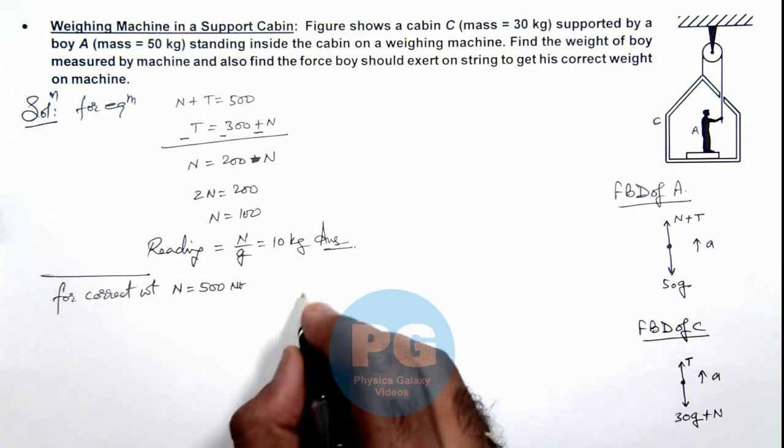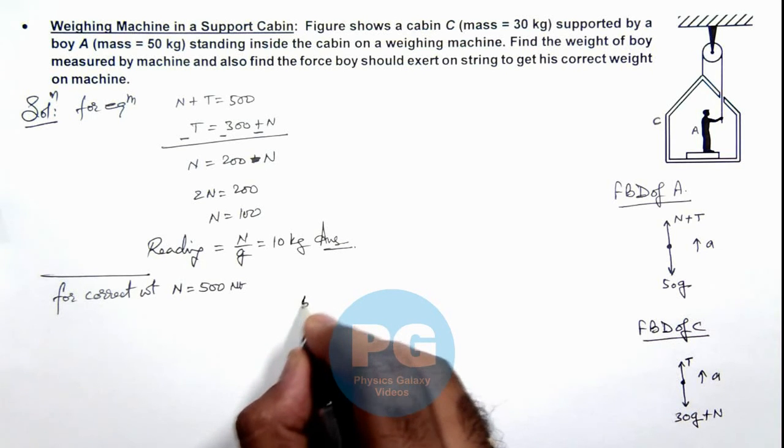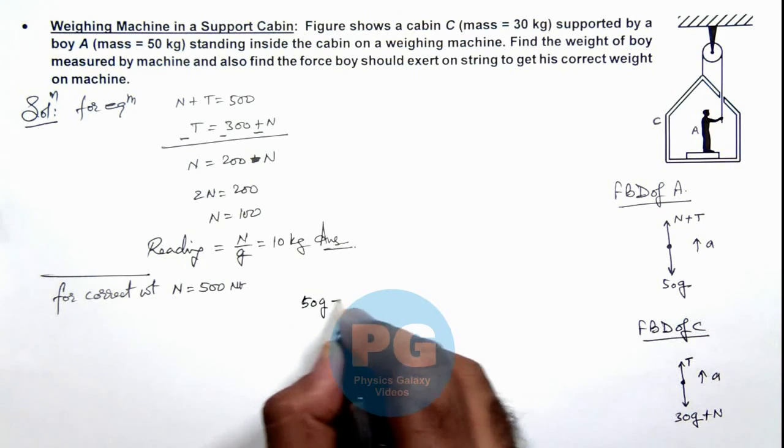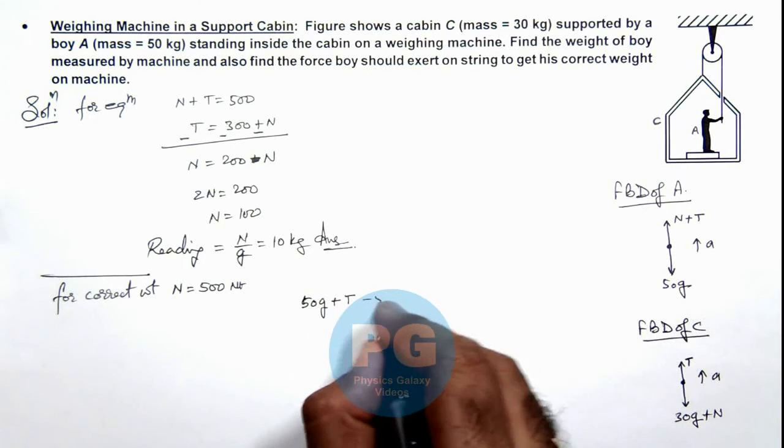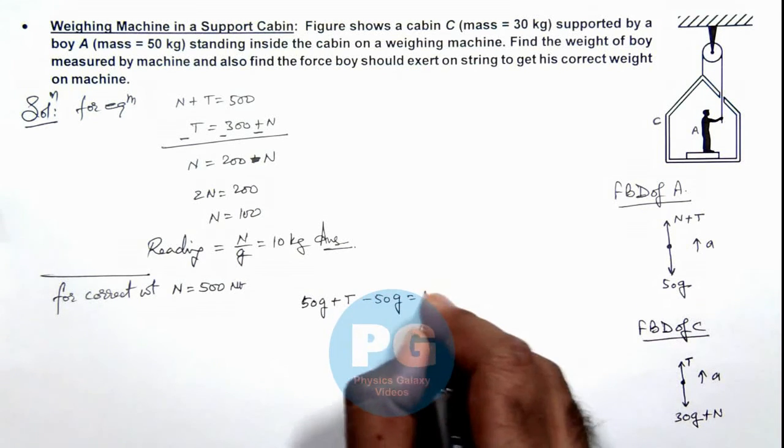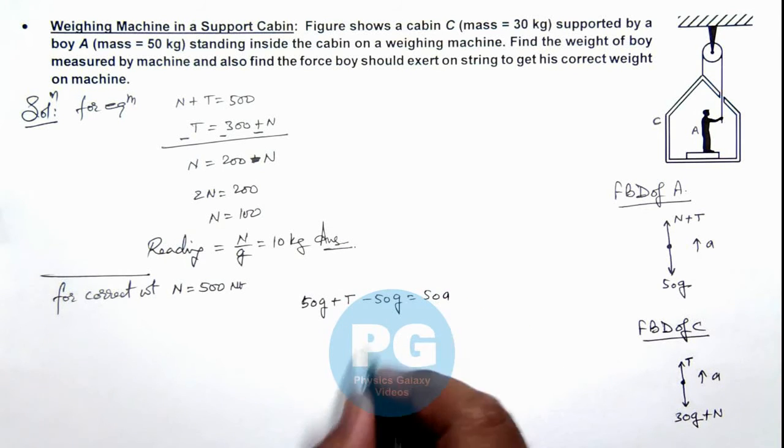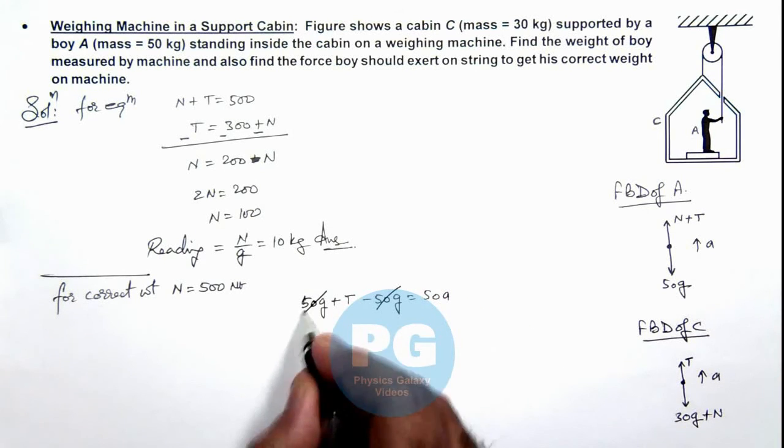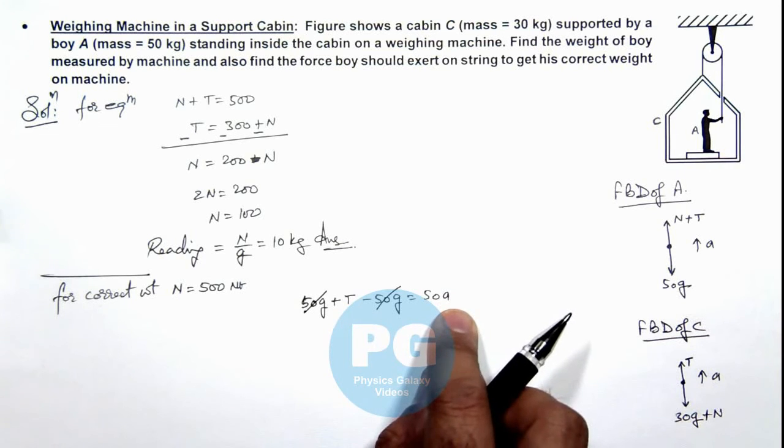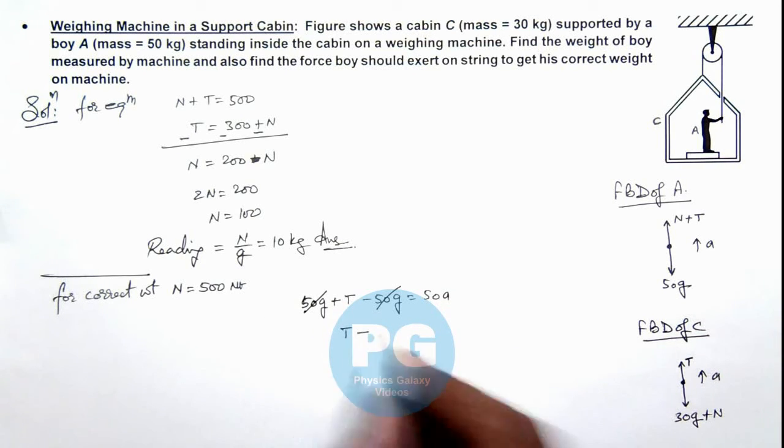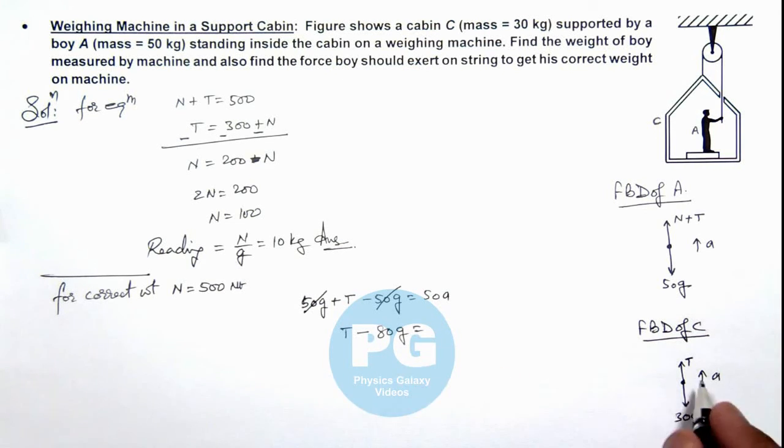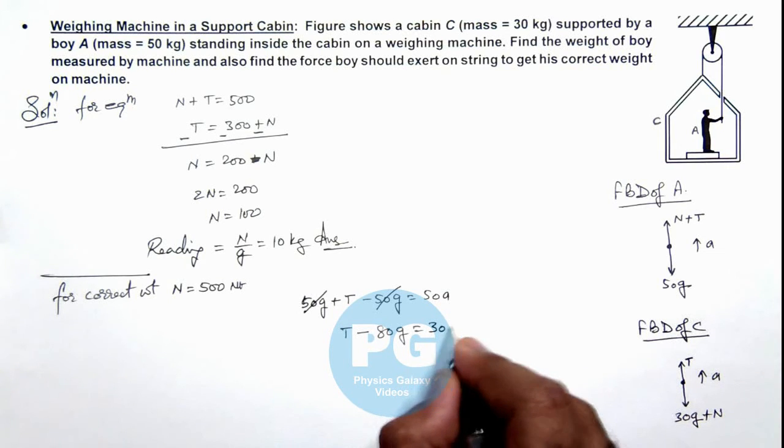The equations of motion will become N, which is 50g, plus T minus 50g equals 50a. So this 50g gets cancelled out, the value of T equals 50a. And for cabin we can write T minus 80g equals 30a, where cabin mass is 30 kg.